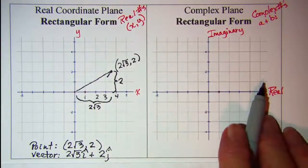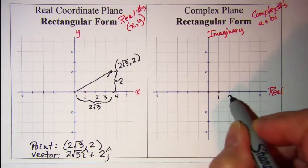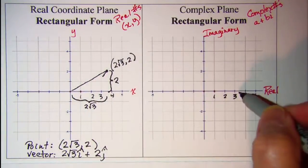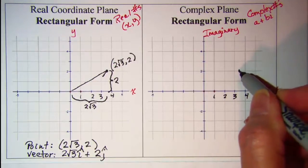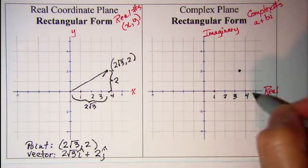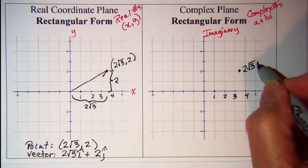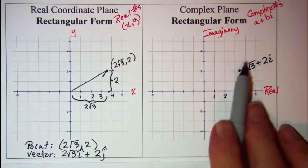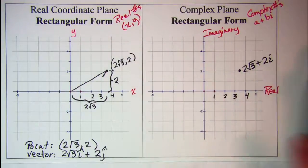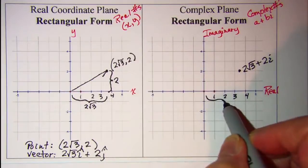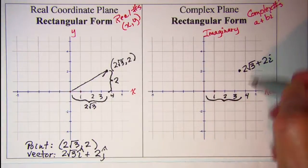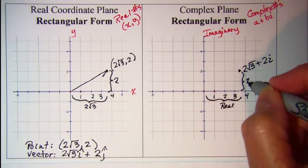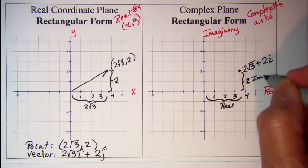Now on the complex plane I'm going to take the same numbers and if I go right to √3 and up 2, that point on the real axis I have 2√3 and on the imaginary axis I have 2i. So this point is shown with the binomial 2√3 plus 2i. And again this is my real component and then this is my imaginary component.